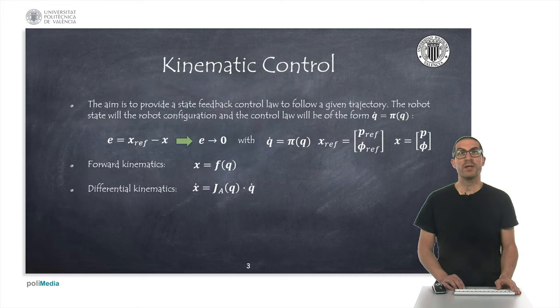The aim of the kinematic controller is to provide a state feedback control law, being the state of the robot, the positions or angles of joints. This control law will provide an expression in terms of joint velocities that must be applied so that the end effector follows a path or trajectory defined in the robot's workspace.